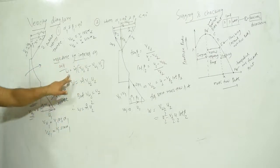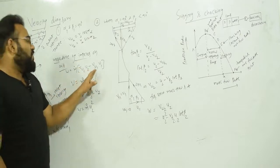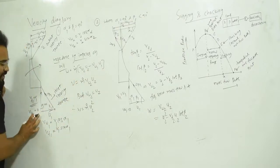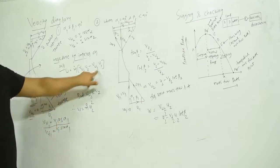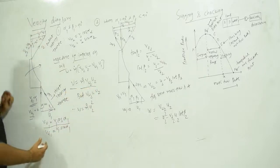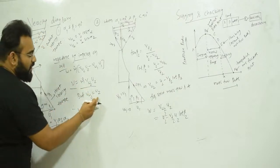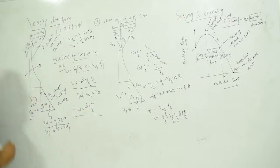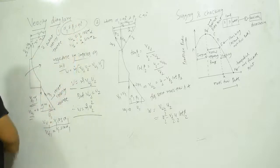Work done by the impeller on the air is: W equals mass flow rate times (vw2·u2 minus vw1·u1). Since vw1 equals v1·cos(alpha1) and alpha1 is 90°, vw1 equals 0. So work done equals mass flow rate times vw2·u2. And since vw2 equals u2, this becomes: W equals mass flow rate times u2².